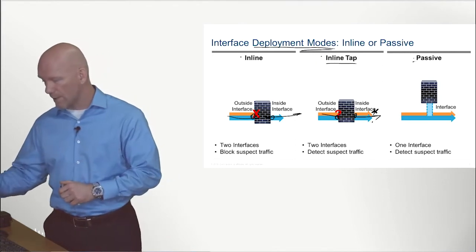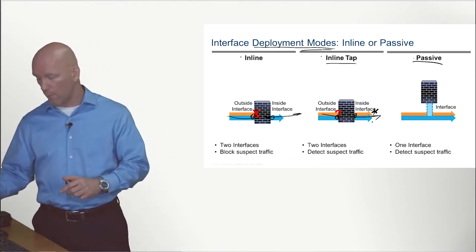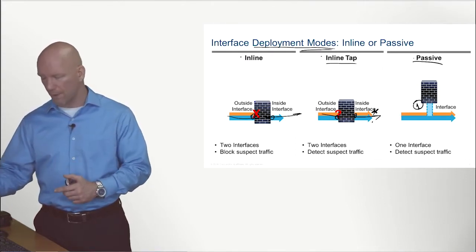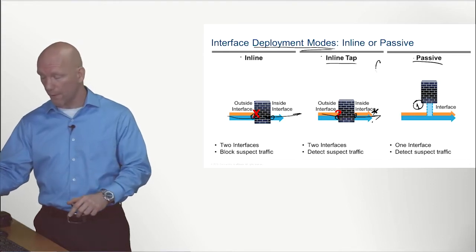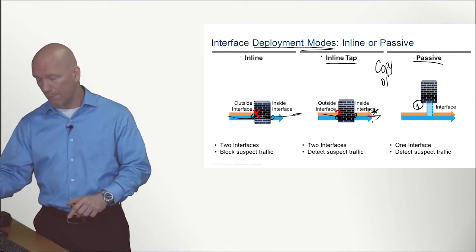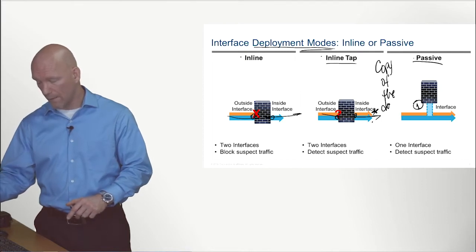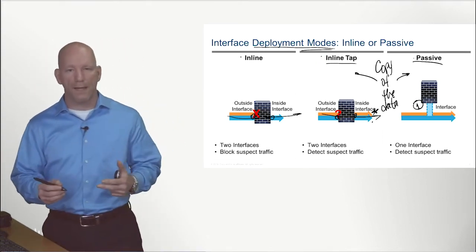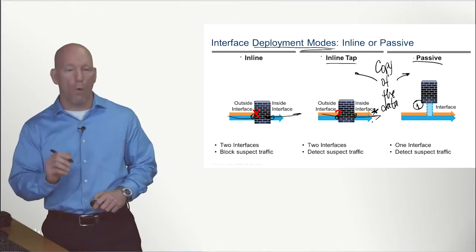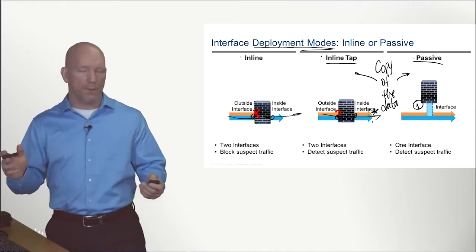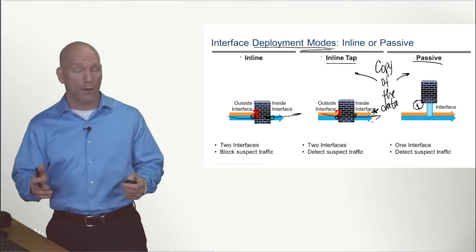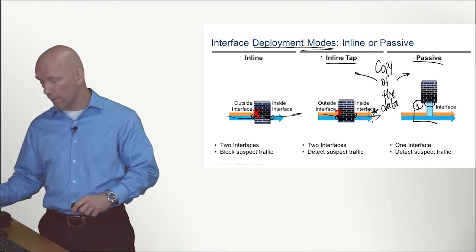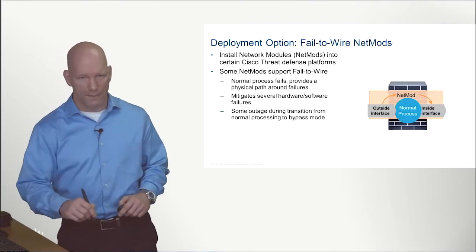Last but not least is passive mode — maybe you're in a scenario where only one interface is physically available. You're still working with a copy of the data, just like in inline tap mode. Passive mode uses only one interface, which may be necessary when you have a limited number of physical interfaces left on the appliance or physical ports available on the connecting switch.